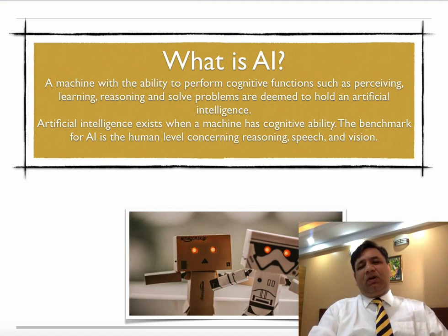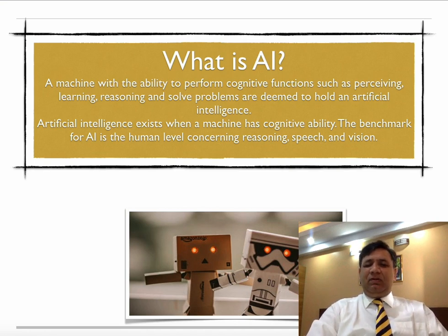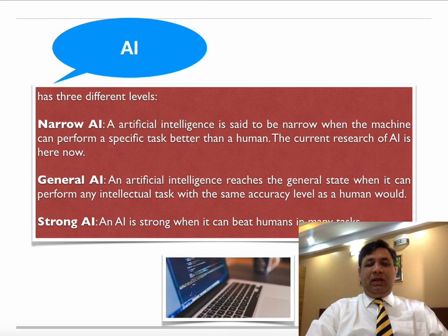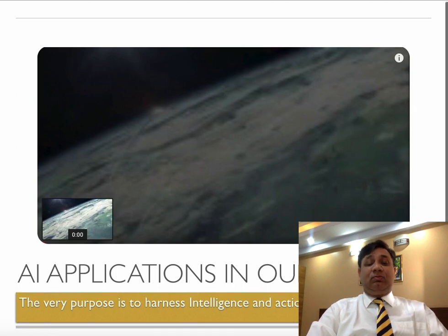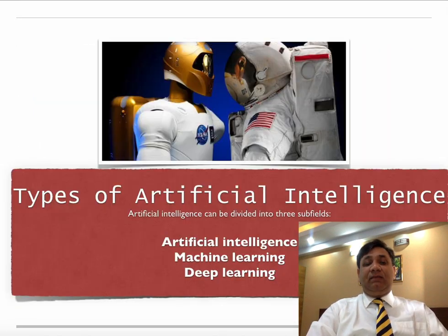The benchmark for AI is the human level of reasoning, speech, and vision. There are three levels of AI: narrow AI, general AI, and strong AI. AI applications extend to our real life, with the very purpose being to harness intelligence and actions to maximize success. The types of AI include AI itself, machine learning, and deep learning.